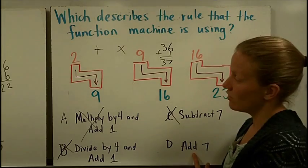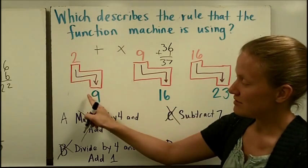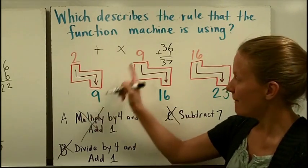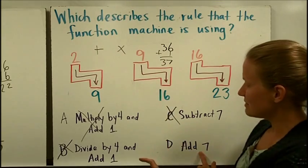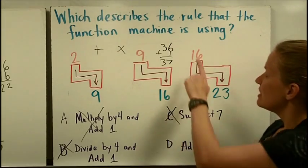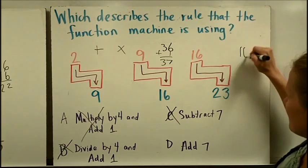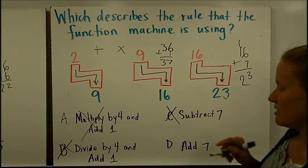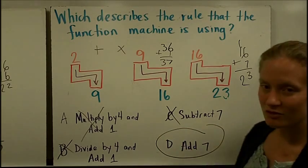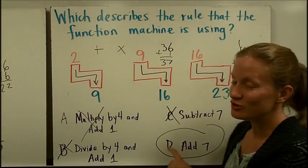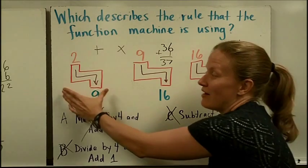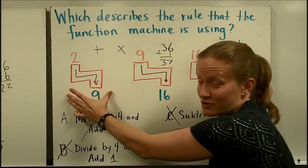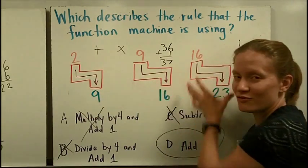So let's check to see if this rule might work. 2 plus 7 does make 9. 9 add 7 makes 16. 16 plus 7 does make 23. So the rule for this function machine is add 7. Be sure that you don't stop after just looking at the first function machine that you're given. Check your answer for all of them.